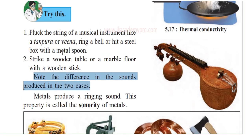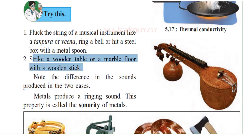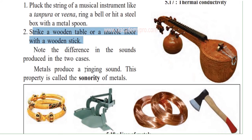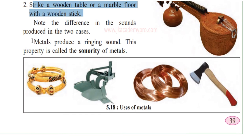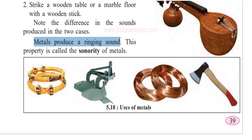When you pluck the strings of a Tanpura or Veena, ring a bell, or hit a steel box with a metal spoon — compare that to striking a wooden table or marble floor with a wooden stick. What is the difference in sounds? Are all the sounds the same? No — metals produce a ringing sound; they vibrate.